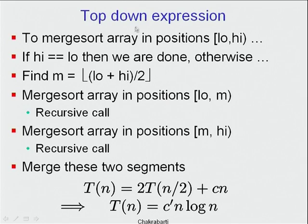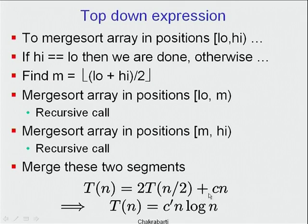Symbolically, the time to solve merge sort on n elements requires solving two subproblems each of size n/2, then doing the merge in time proportional to cn. Merging two n/2 elements takes approximately n time. Solving this recurrence gives T(n) equal to some constant c' times n log n.